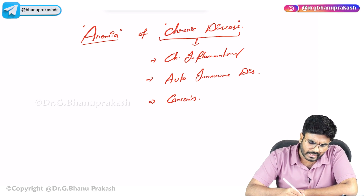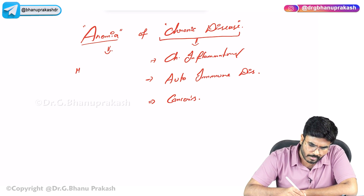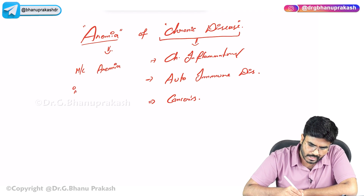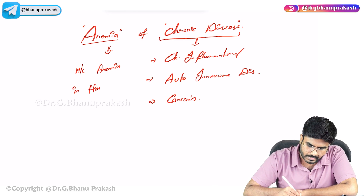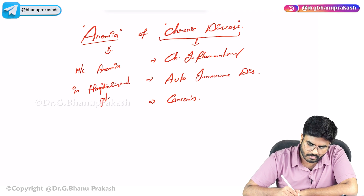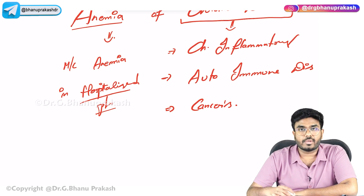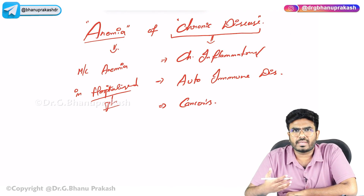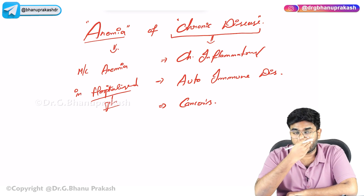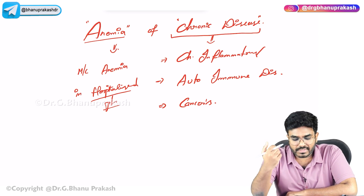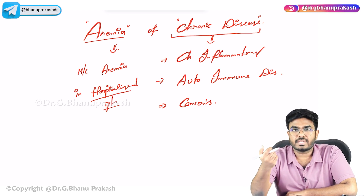Anemia of chronic disease is said to be the most common anemia in hospitalized patients. Why hospitalized patients? Because patients with chronic inflammatory conditions are usually hospital-admitted, making it the most common type of anemia in that setting.